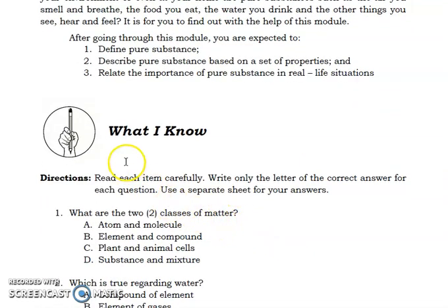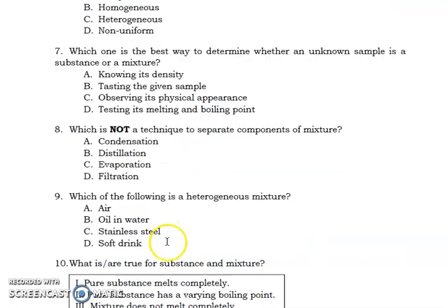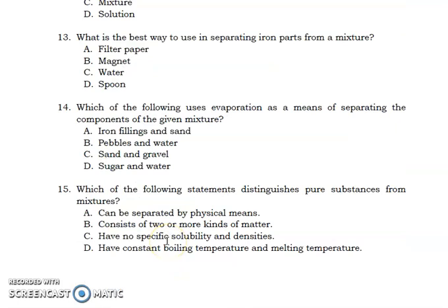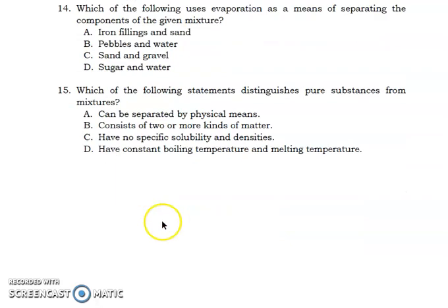Let's proceed with the What I Know part. This will be your first activity for lesson one of module three. This is the pre-test. Get ready with your papers and pen. Write down your name, your grade and section, the subject, the module number, and the lesson number. Read each item carefully. Write only the letter of the correct answer for each question. We're going to number your paper for the What I Know from numbers 1 to 15. You will just write down the letter of your answer. That's the first activity.